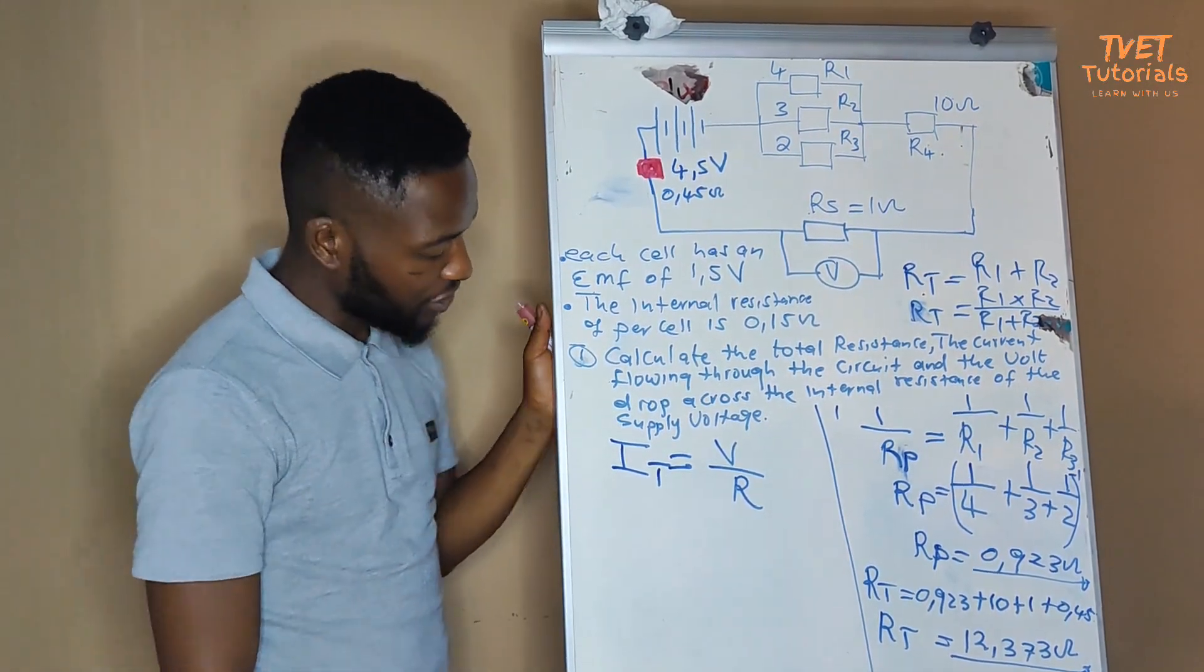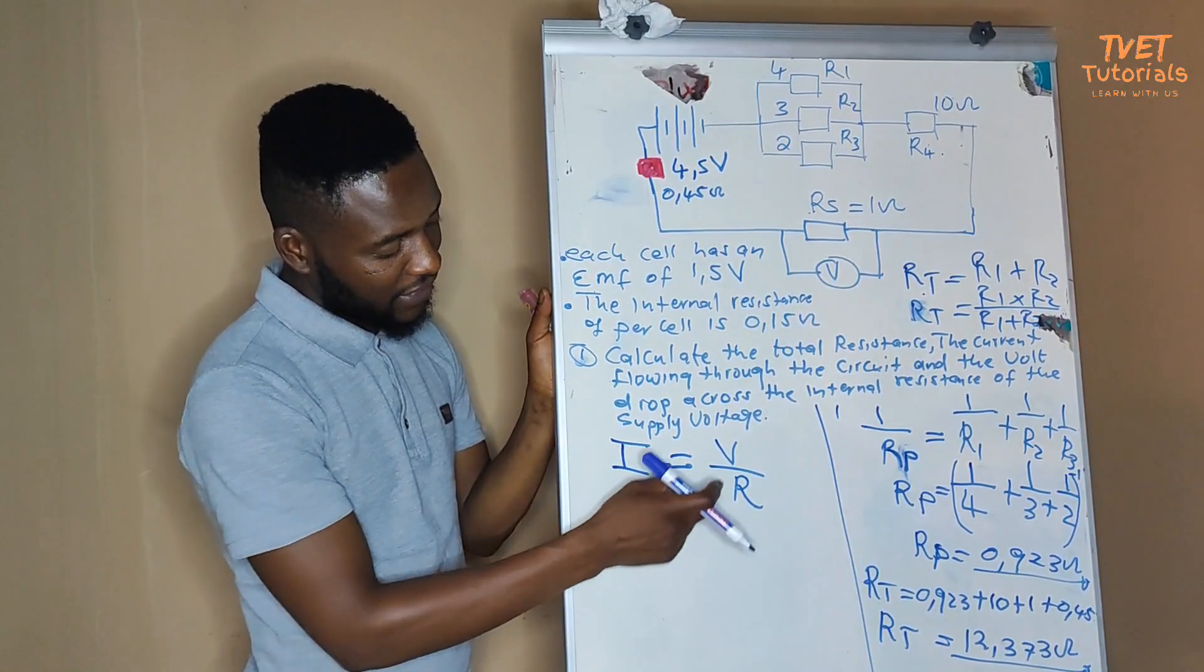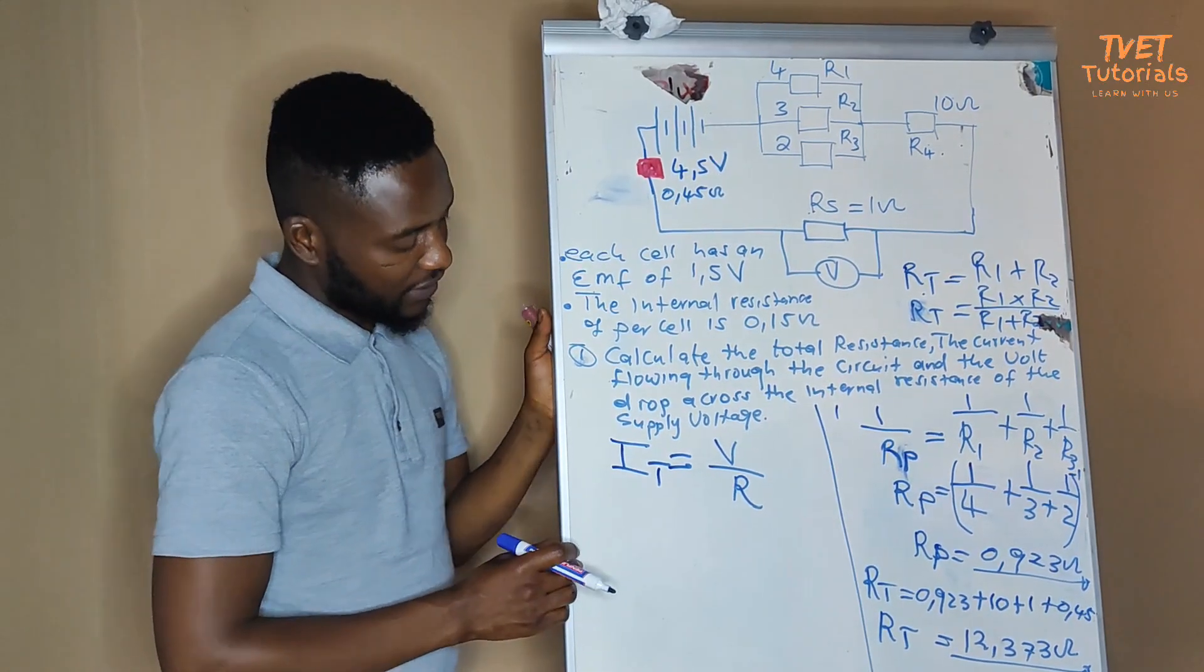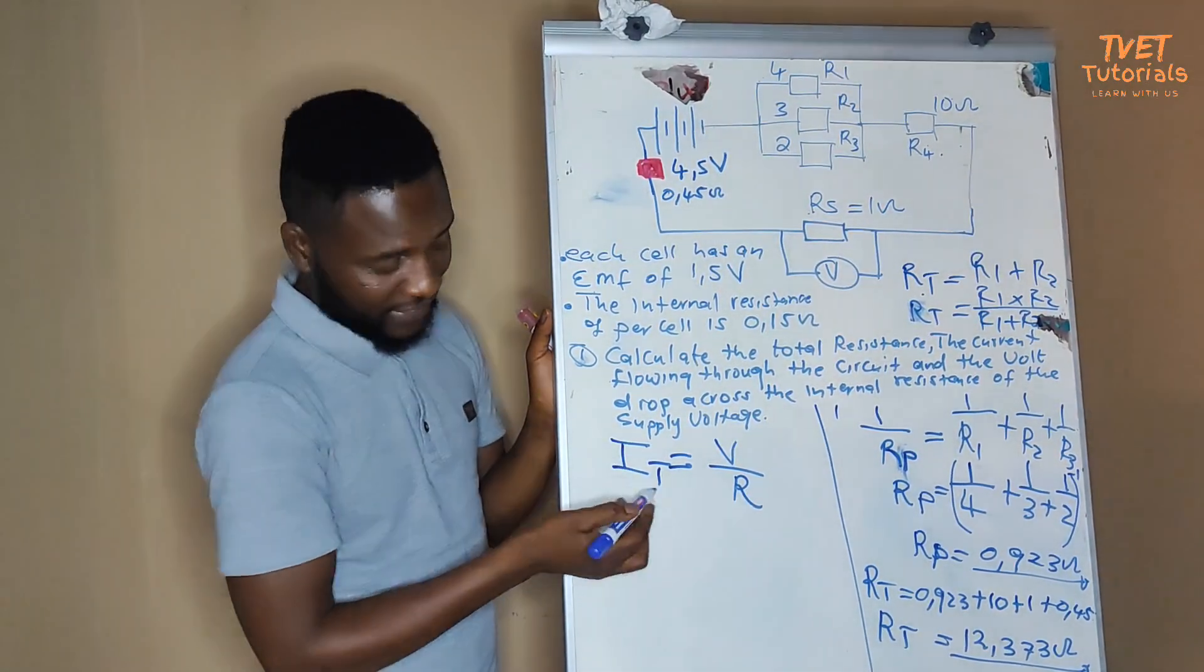You can see the equation on the board. I is equal to V over R. Now, we are asked to calculate the total current.